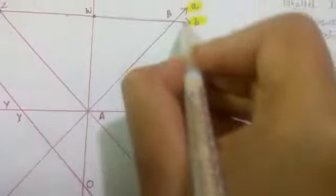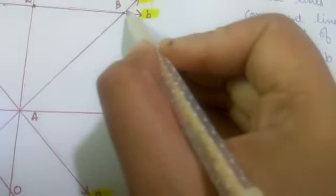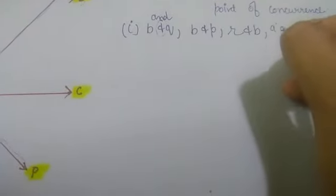Next, at point W, two lines intersect — this line is R and one more line is B, so R and B are intersecting lines. Then the next point of intersection involves lines B and A, so A and B are also intersecting lines.